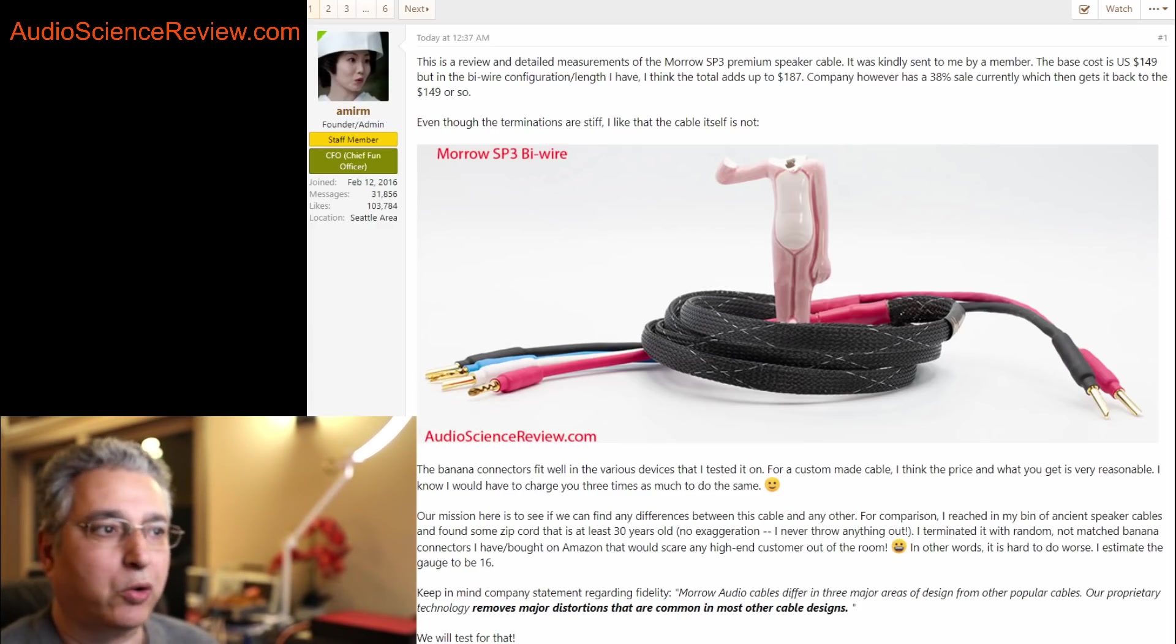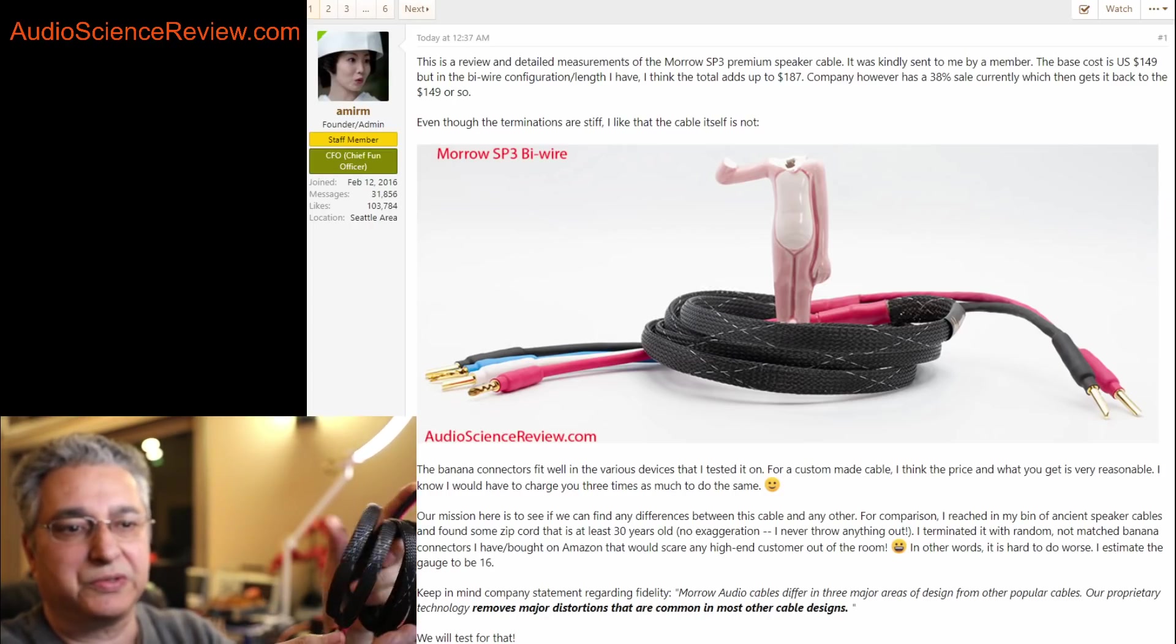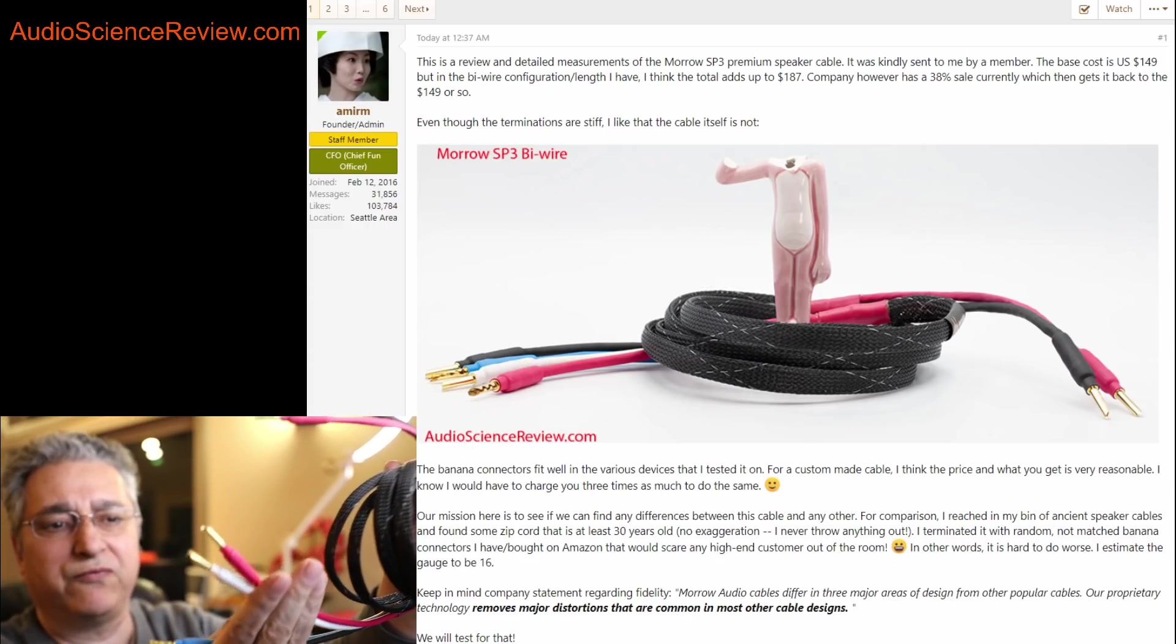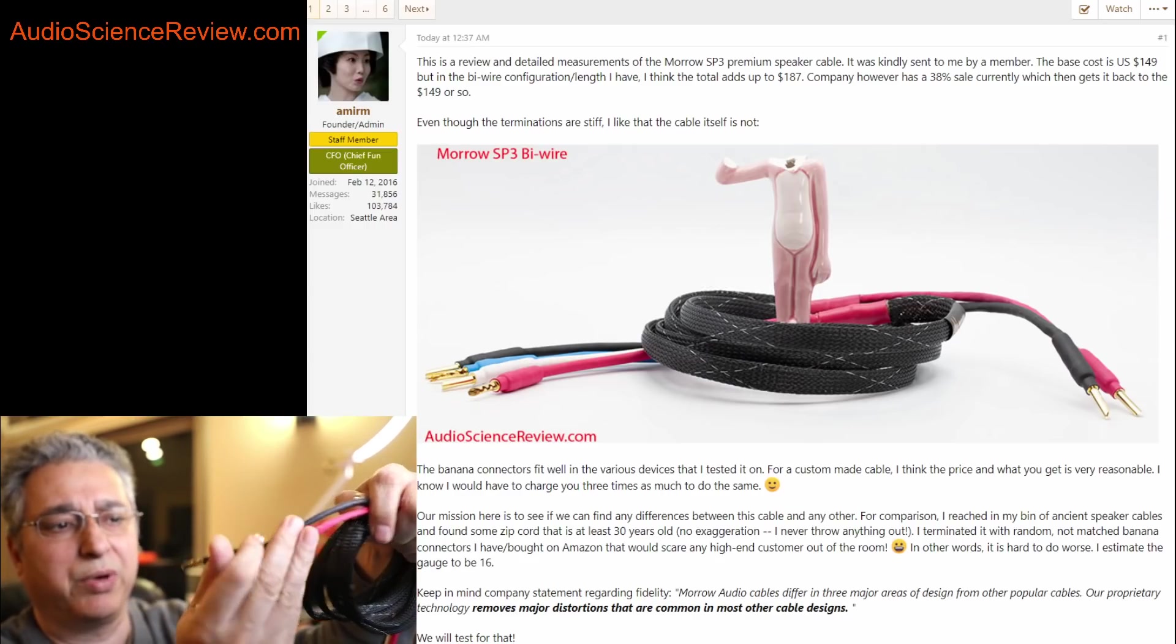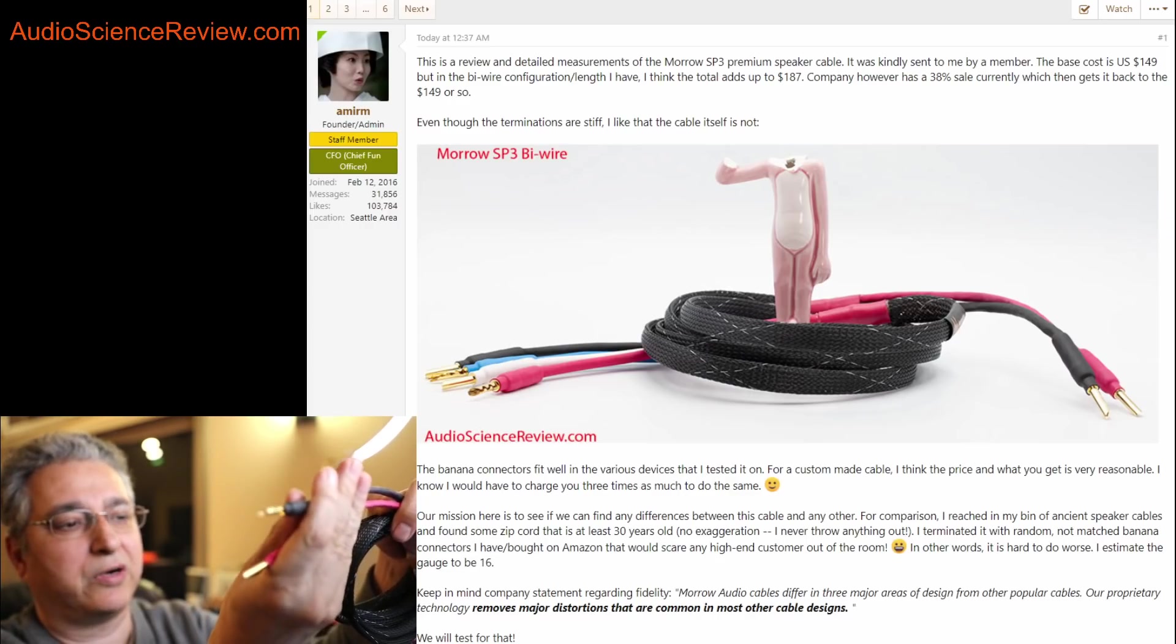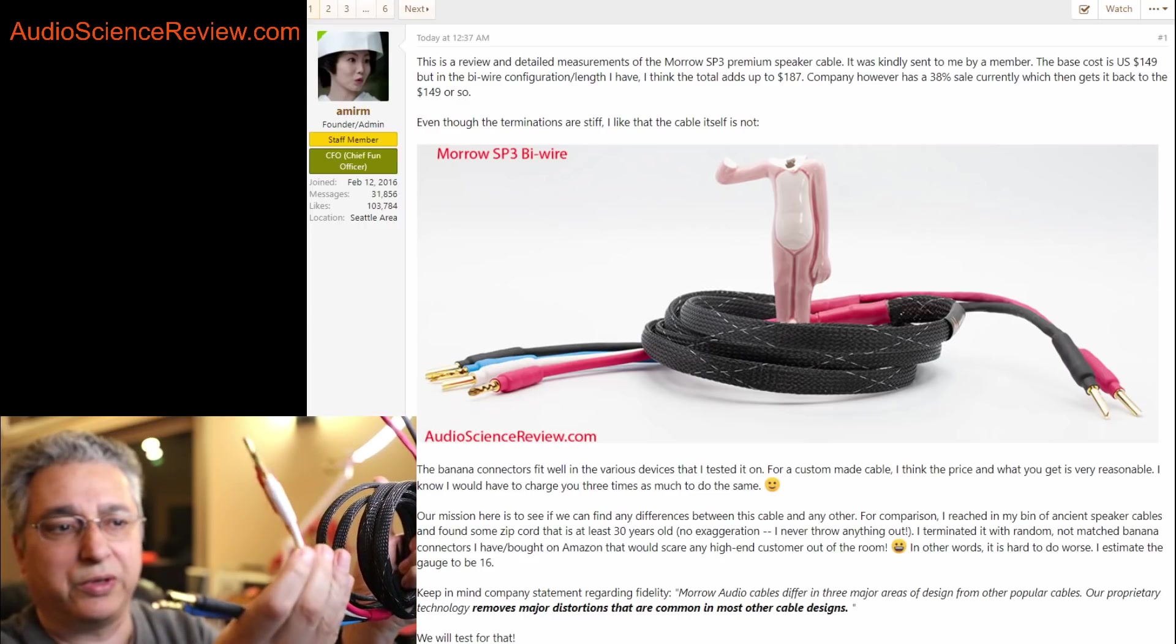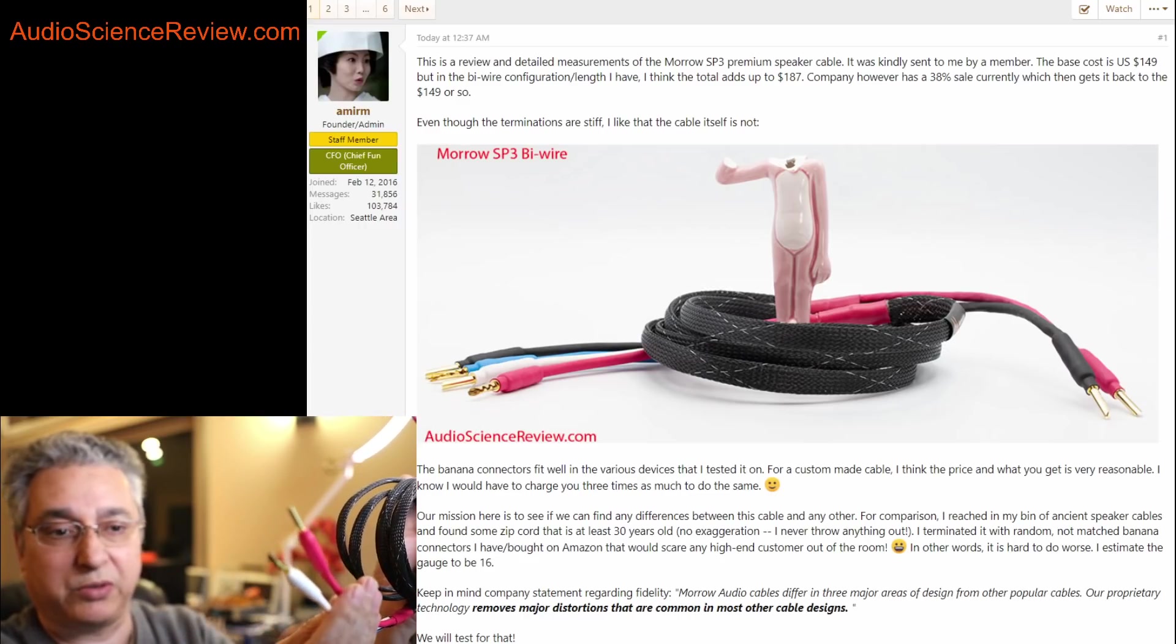It's from a company called Morrow Audio, model number SP3. The version I have is this cable, an 8-foot cable in the bi-wire configuration, so you've got one pair at the amplifier end and then you can split it and drive the tweeter and the woofer with two separate wires.